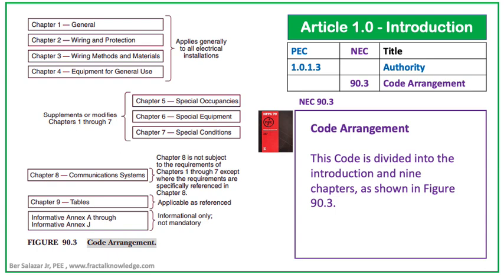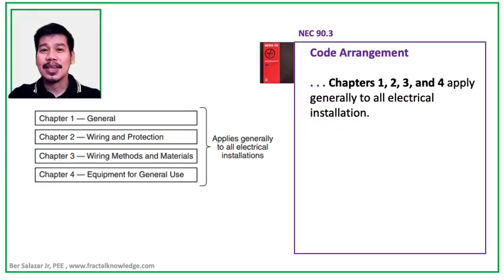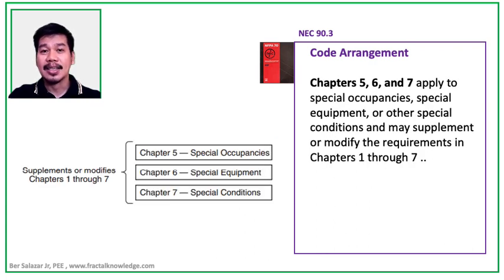In relation to code arrangement, the Philippine Electrical Code has no section for code arrangement. Unlike in 2009, we had an arrangement similar to NEC. NEC 2017, however, was arranged like this: Chapter 1, 2, 3, and 4 applies to all electrical installations. Chapter 5, 6, and 7 applies to special occupancies,